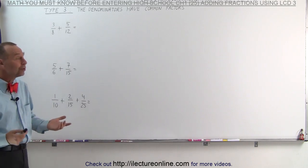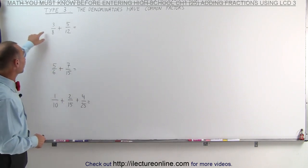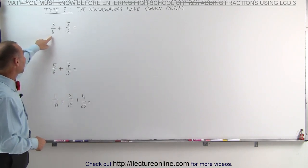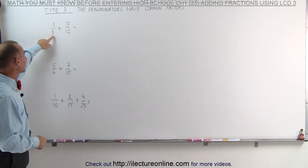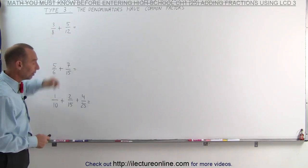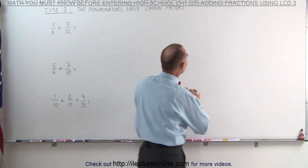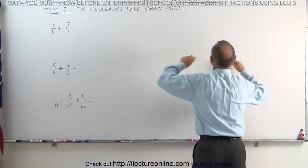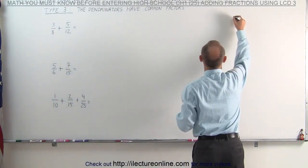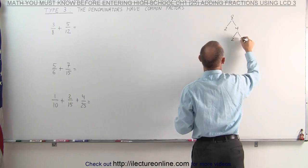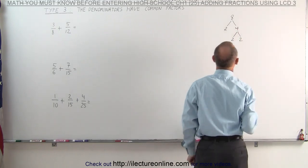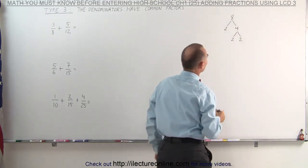Let's go ahead and do that with our first example here. We have the two denominators 8 and 12, so what we're going to do is write the denominators as a product of their factors.